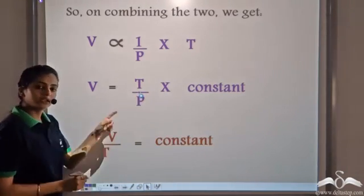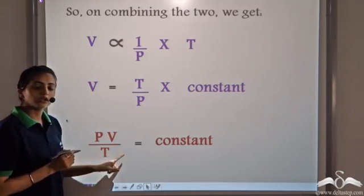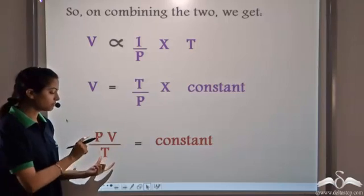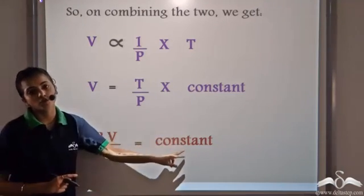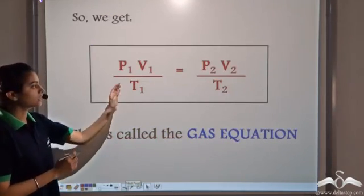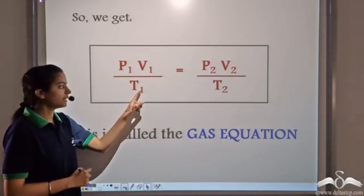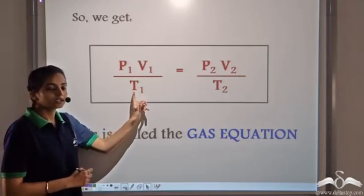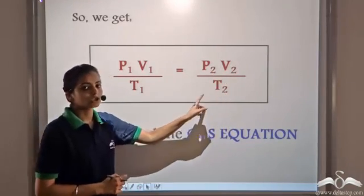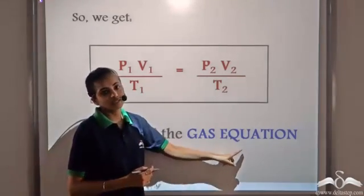If we rearrange this, we get that pressure times volume divided by temperature is a constant value. So for a particular gas, writing this for two conditions — initial and final state — the initial pressure times initial volume divided by initial temperature equals the final pressure times final volume divided by the final temperature. This equation obtained by combining Boyle's law and Charles' law is known as the gas equation.